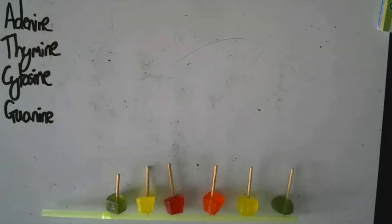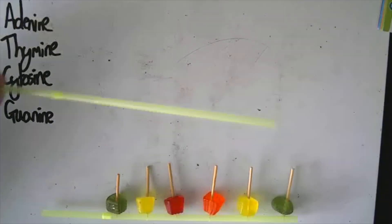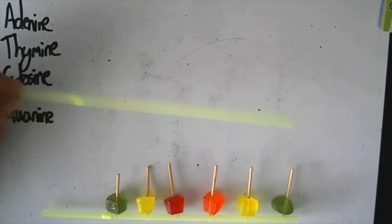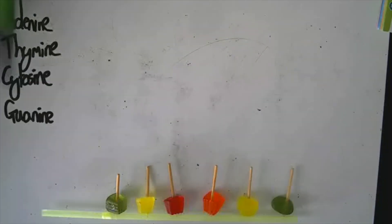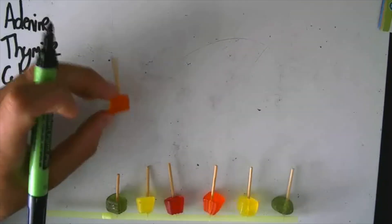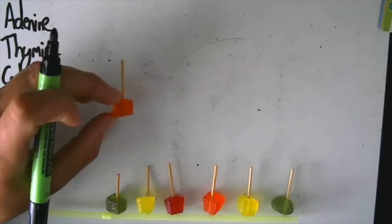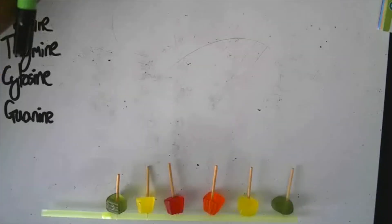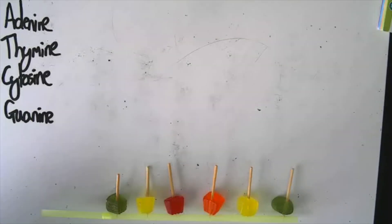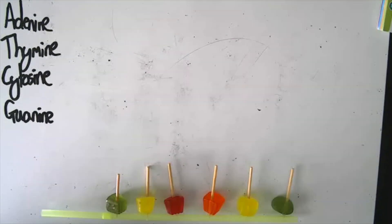In this part of the video we're going to model the structure of DNA using a straw to represent the phosphate sugar backbone and midget gems to represent each of the DNA bases. Like we've already said, there are four DNA bases and each of them will pair to another one.